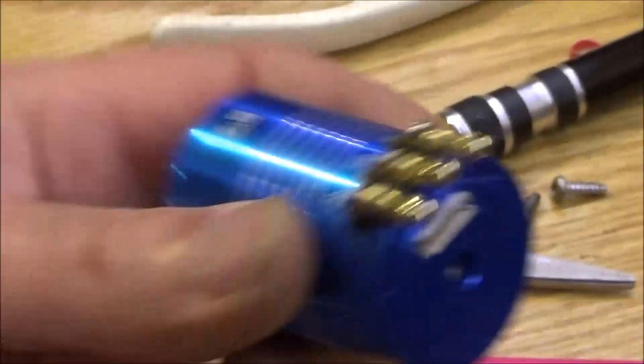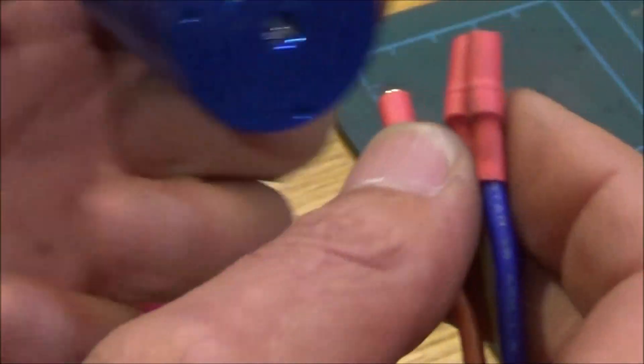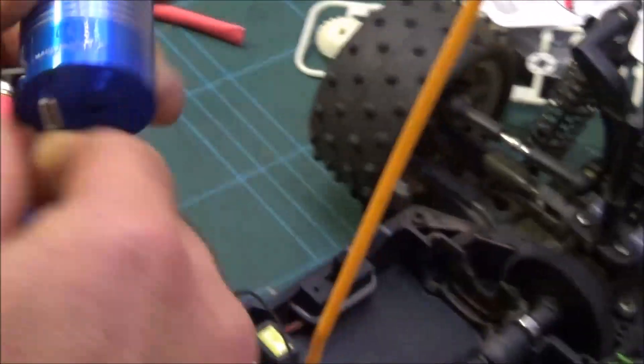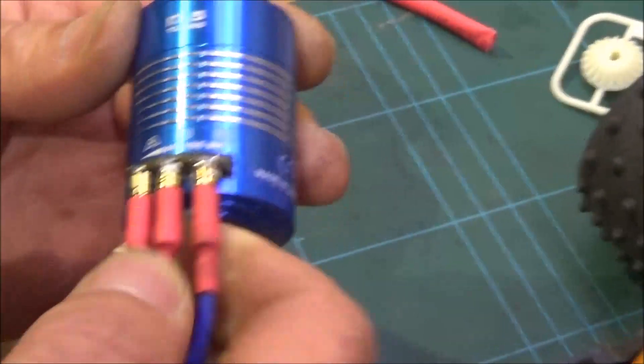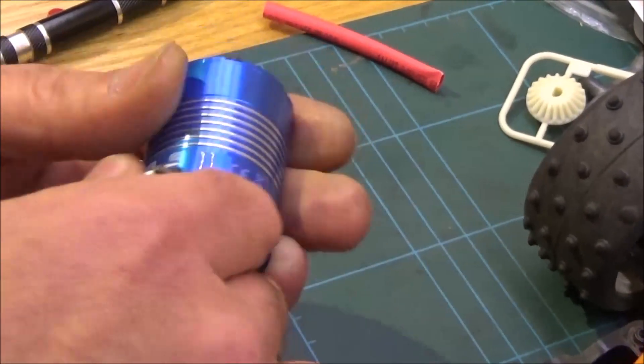Okay, so that's done. Nice bit of heat shrink on there. Just make sure that it connects all right. Nothing's going to fall off. There we go. Nothing's touching. It's all nice and solid. Nice looking job, isn't it? Yeah, quite good that. So now we're ready to fit the motor into the car.